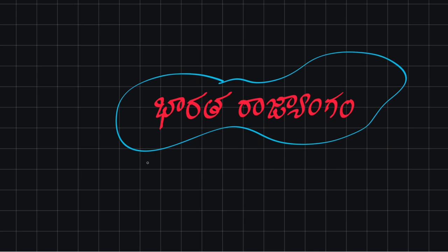So now we have a rules book. What does 'rules book' mean? One country is allowed to have rules — that is the constitution.